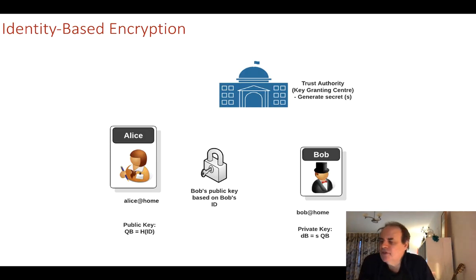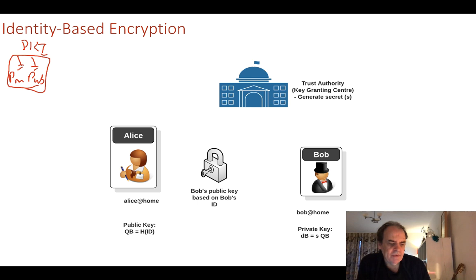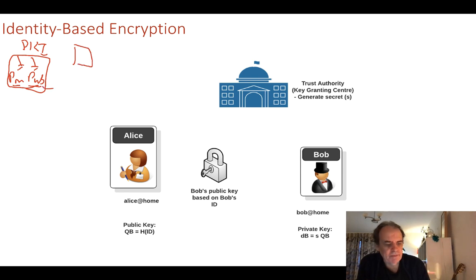With identity-based encryption we have a different type of method compared to our normal PKI infrastructure. Normally with PKI we have a public key and a private key defining our key pair. We sign things with a private key and verify them with our public key. To encrypt, we encrypt with someone's public key and decrypt with the private key. With PKI, the public key is distributed on a digital certificate.